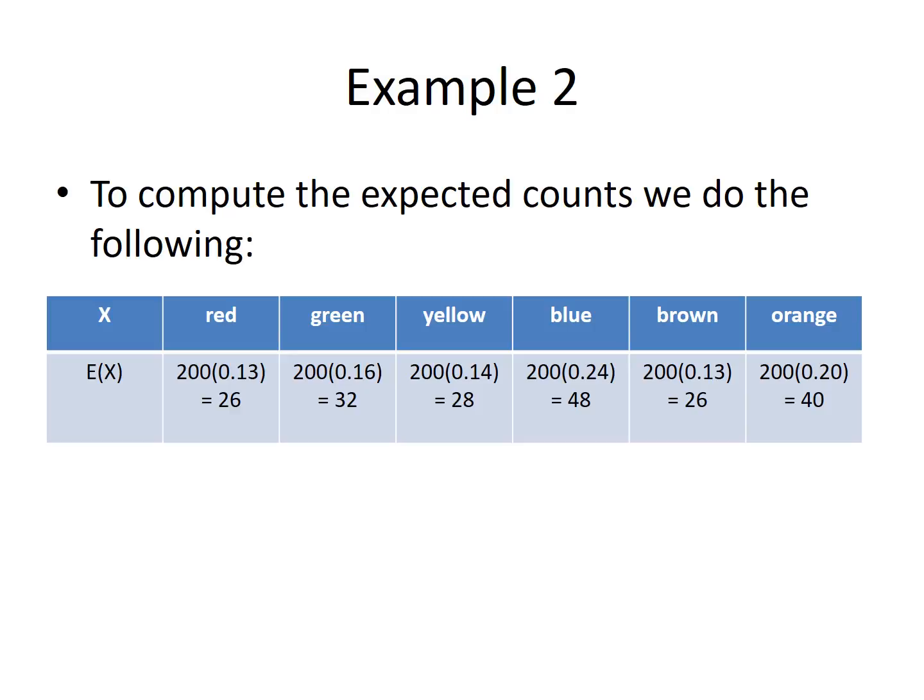For green, I would expect to see 32 under the same calculation. And for yellow, blue, brown, and orange, those expected counts are computed here as well by simply taking the number of trials — in this case 200 — times the probability of success, in this case the probability of getting each of those colors.